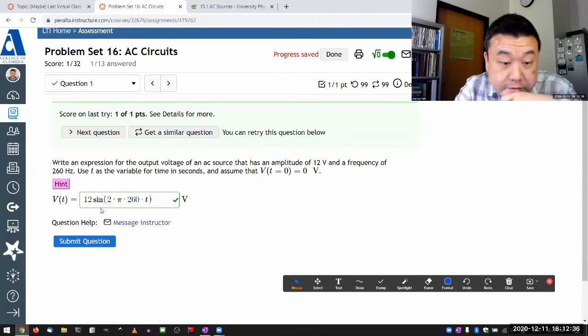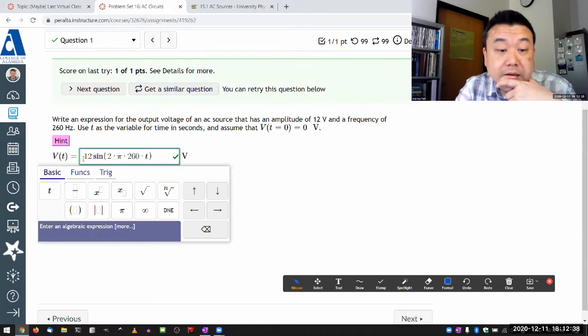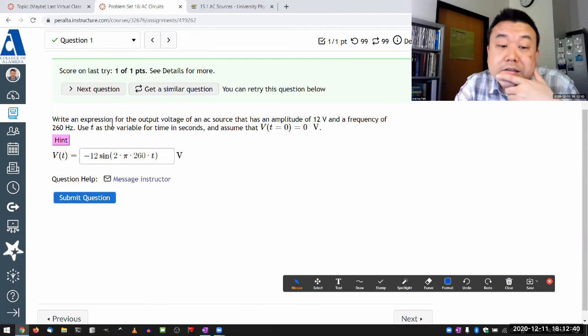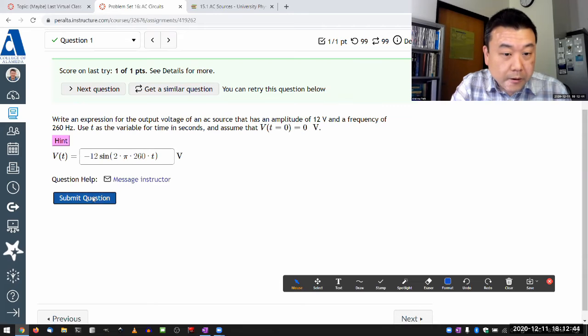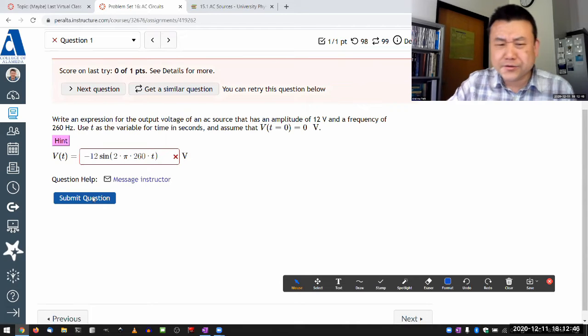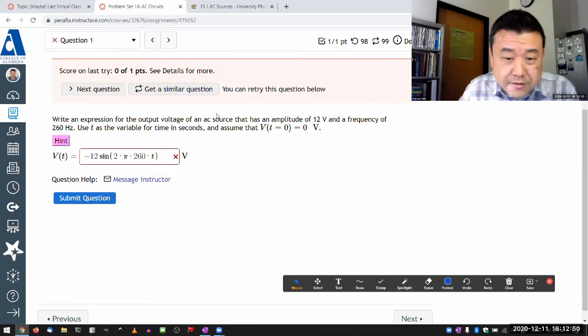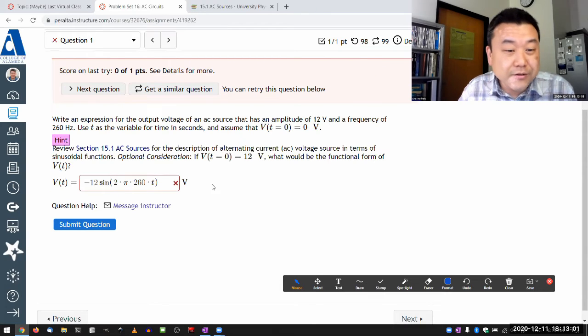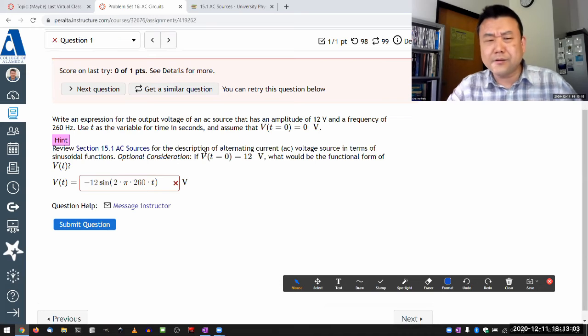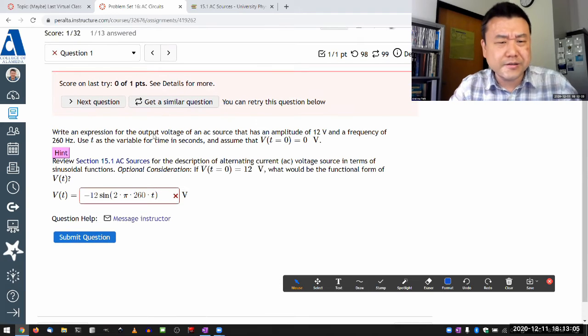One thing I'm curious is if it would accept this as correct answer, because technically I think it satisfies everything. I should have fixed that. I'll fix that because I think this with the minus sign satisfies everything - amplitude 12 volts, frequency of that, and at time equals zero, negative of zero is still zero. So I'll go in and fix that after the session.